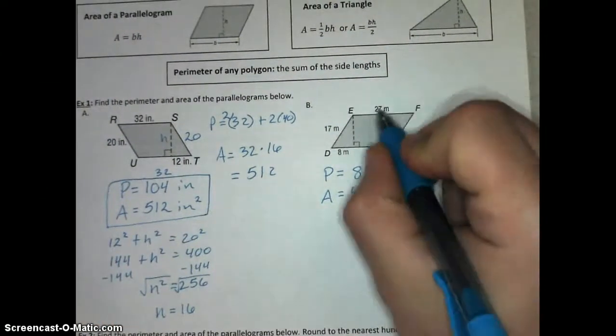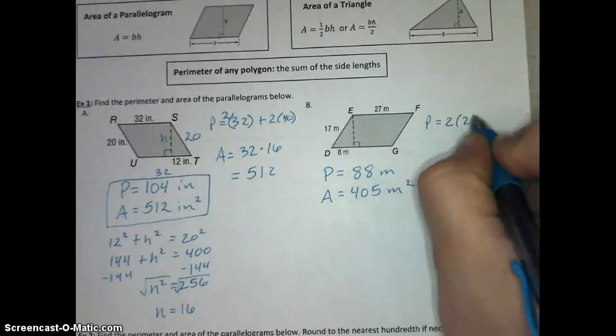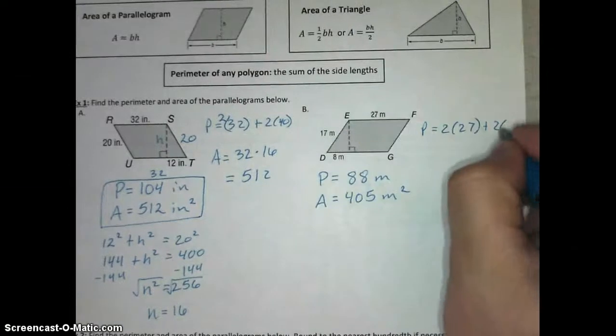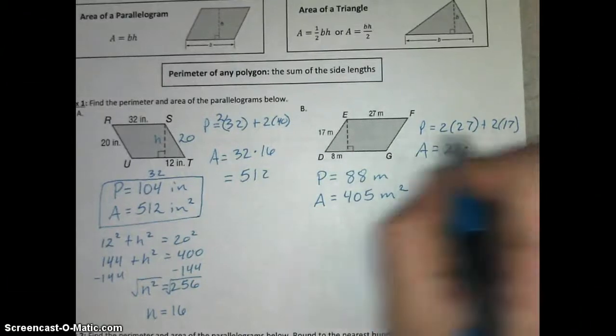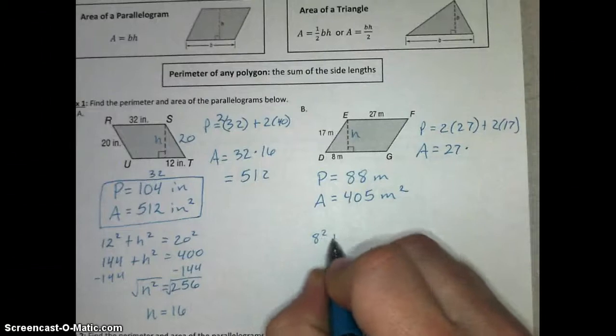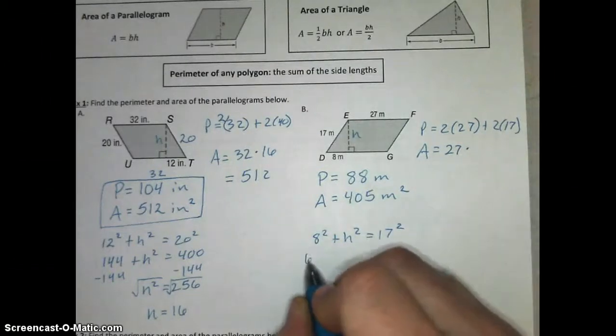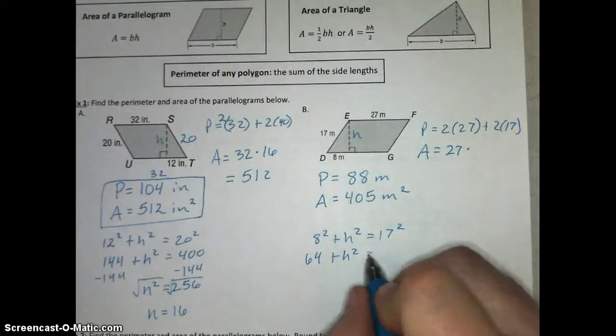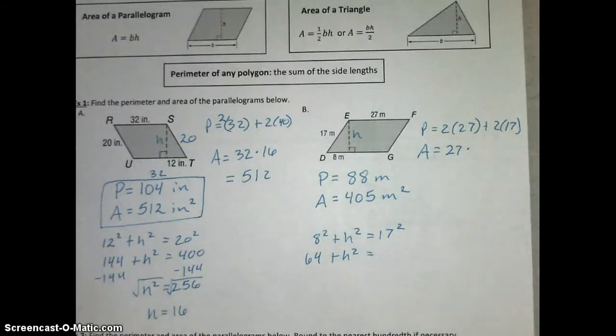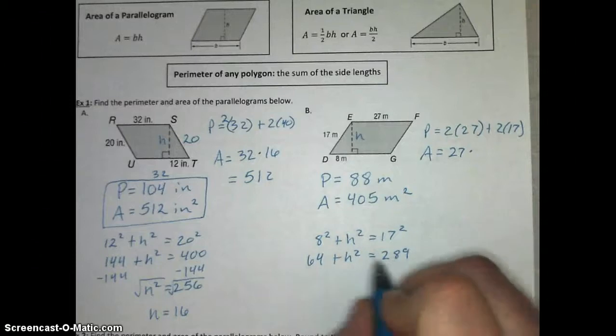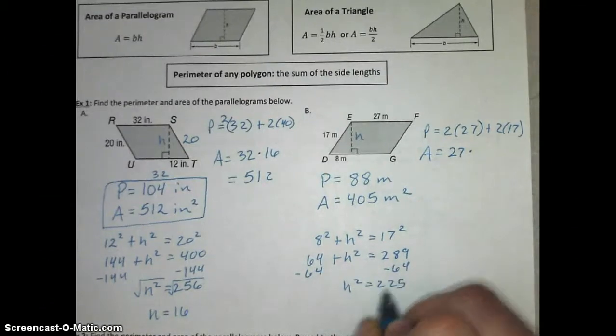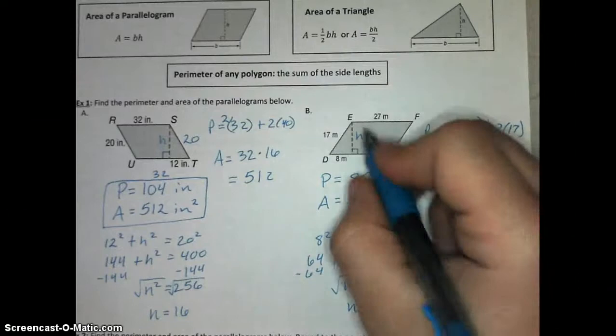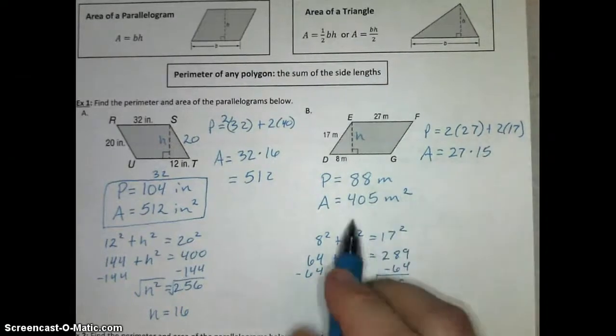Very similarly here, to get the perimeter, we're going to add up two 27s, 27 and 27, plus 2 of our 17s. And that's how we get 88 meters. But for area, we need to take our base, 27, times that height, which we have to find again using Pythagorean Theorem. 8 squared plus h squared equals 17 squared. And that's 289 minus 64 then. And that's how we get h squared is 225, which means that h is 15. Since h is 15, that's what we multiply by our 27 length base, and that's how we get 405 square meters.